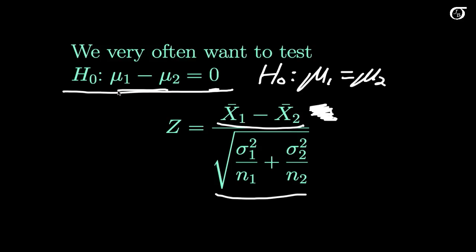In a rarer case, if we wanted to test that the difference in population means was equal to 5, or minus 40, or minus π/2, or any other value, we would simply subtract that hypothesized value in the numerator. But by far the most common test is H0: μ1 minus μ2 equals zero, or equivalently that the means are equal.